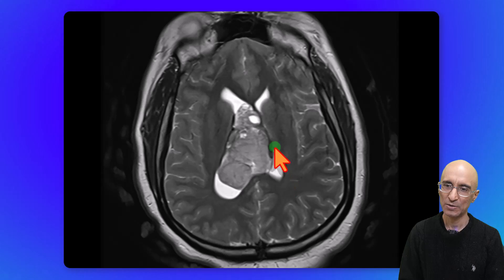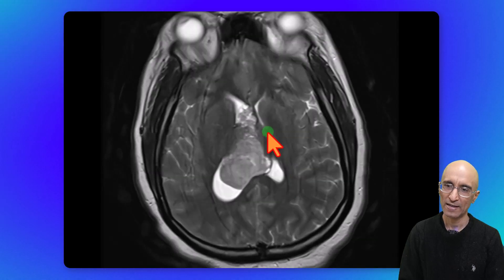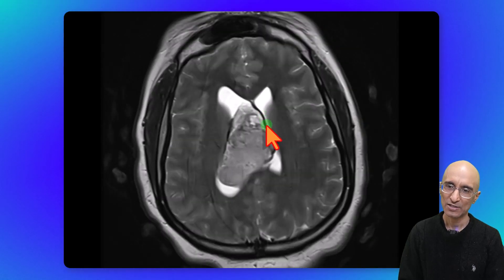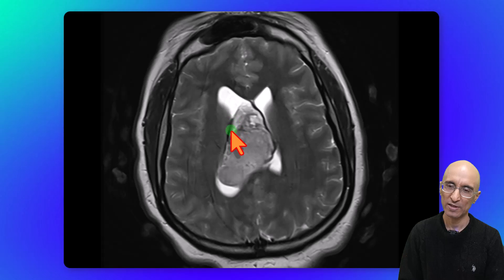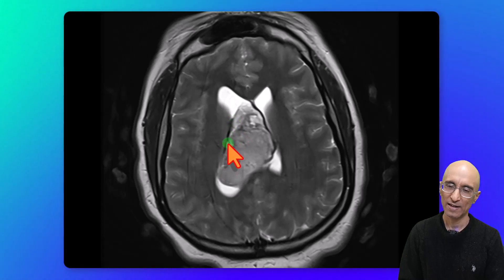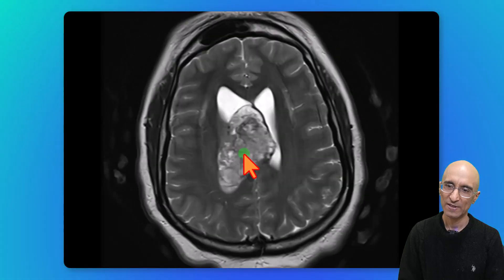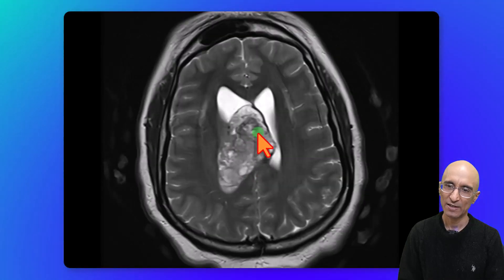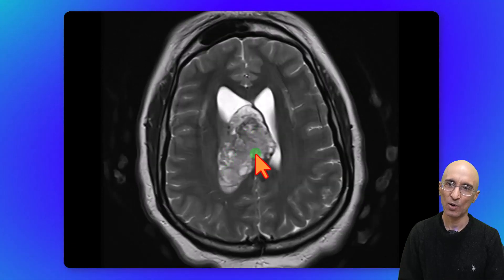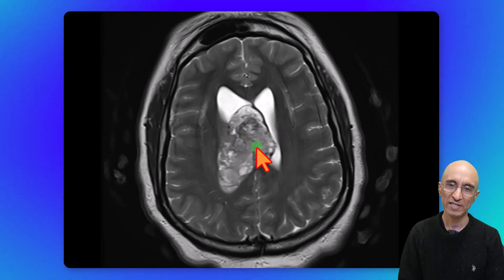On the axial T2 images, we can clearly see the mass attached to the septum pellucidum, extending up to the right lateral ventricle lateral margin. We can clearly identify the cystic foci within the mass, giving an appearance of soap bubble or swiss cheese.